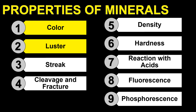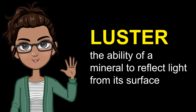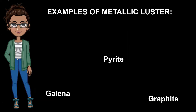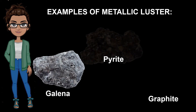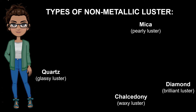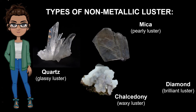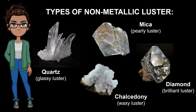The second property of mineral is luster. The ability of a mineral to reflect light from its surface is called luster. Metallic minerals have metallic luster. This type of luster is manifested by the way polished metals reflect light, while non-metallic minerals have non-metallic luster. Examples of metallic luster are galena, pyrite, and graphite. Non-metallic luster is classified into four types: glassy luster, like quartz; waxy luster, like chalcedony; pearly luster, like mica; and brilliant luster, like diamond.